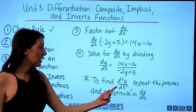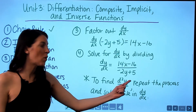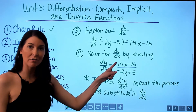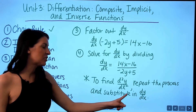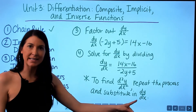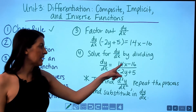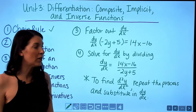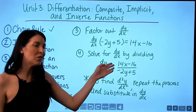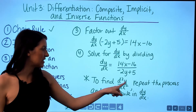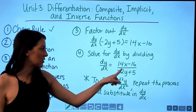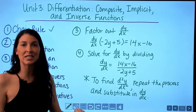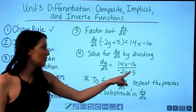If you need to find the second derivative, repeat the differentiation process on dy/dx. When you apply the quotient rule, you'll encounter a dy/dx term in the result — substitute in the expression we just found, (14x minus 16) over (negative 2y plus 5), in place of dy/dx.